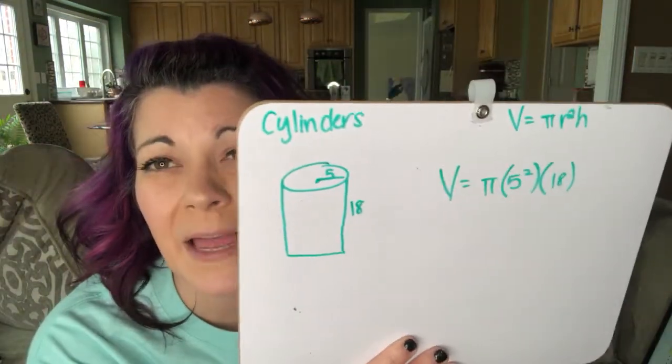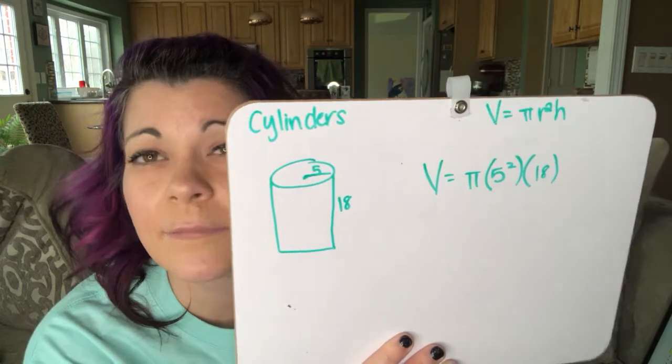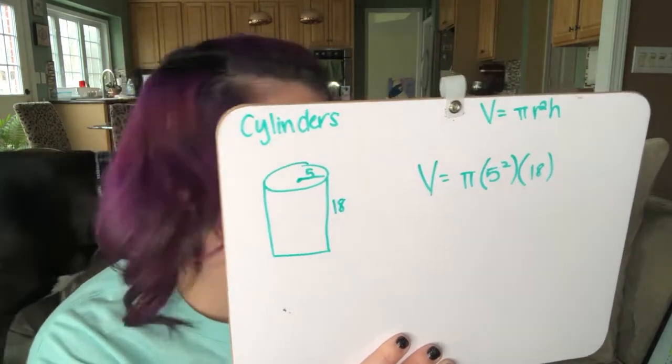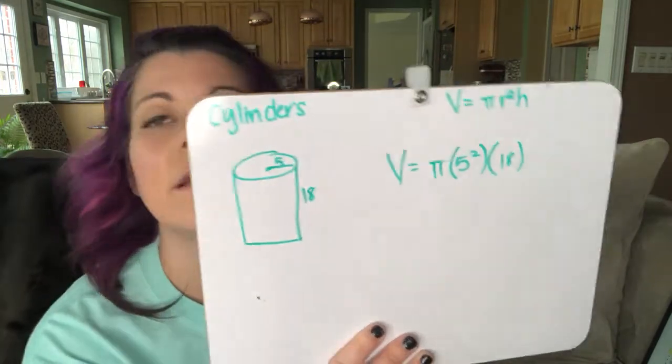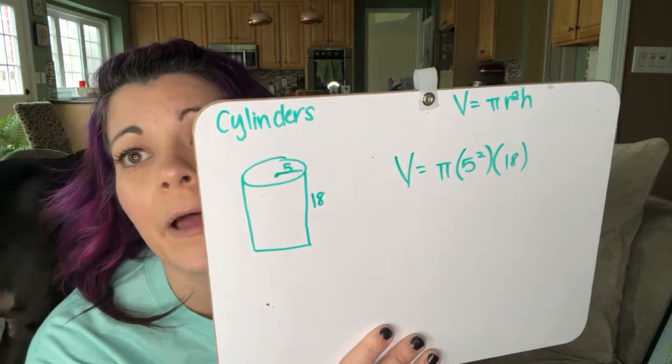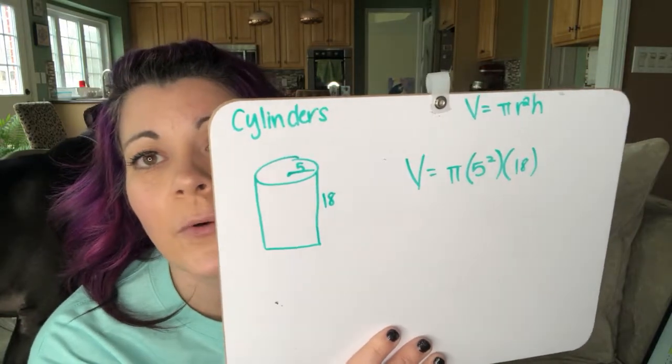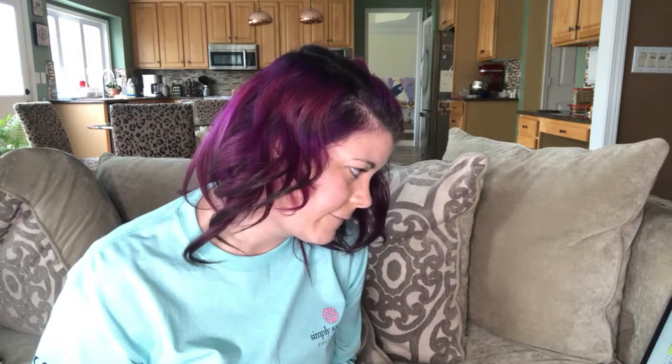I'm going to multiply pi at the very end because sometimes your teacher will say find the answer in terms of pi. And so that means you don't multiply out through pi. So five squared is 25, and then 25 times 18 is 450 pi.